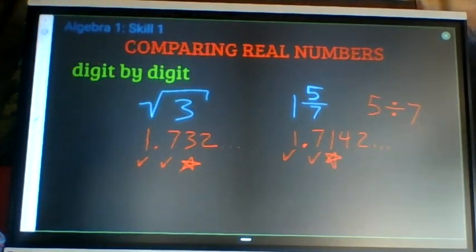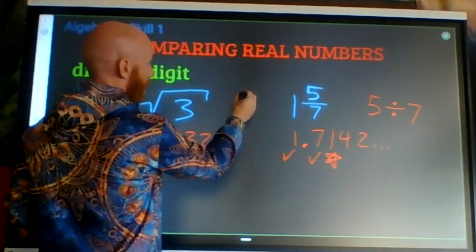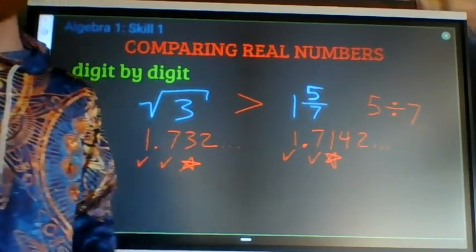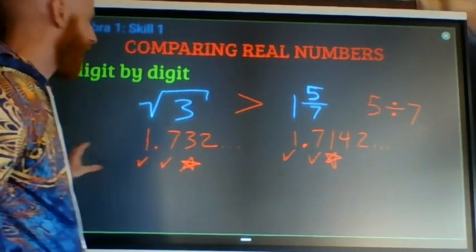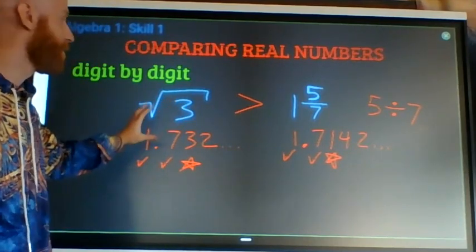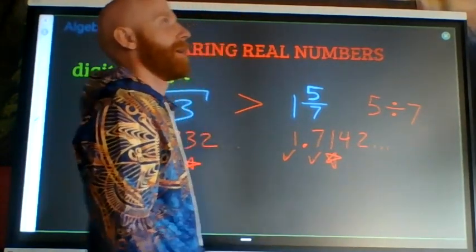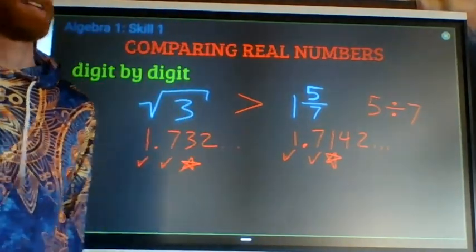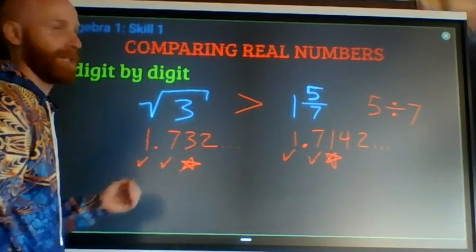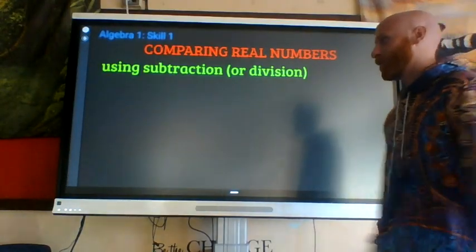And that's where I can stop looking. So 3 doesn't match 1. 3 is bigger than 1. That means this number is going to be bigger than that number. That's comparison decimal by decimal. It does not matter how many digits are in a number. You could have, in fact you do have, infinitely many digits in this number and that one. The question is the first digit that is not the same, which one has a larger number in that place.